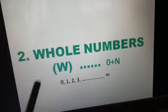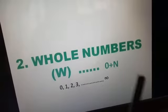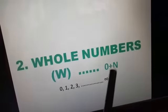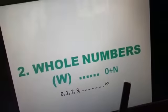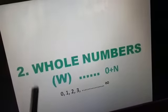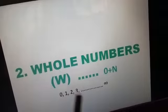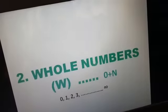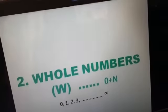Next is whole numbers, denoted by W. See here I have written 0 plus N, that is natural numbers. So whole numbers are 0, 1, 2, 3, and so on. Zero is the smallest whole number.